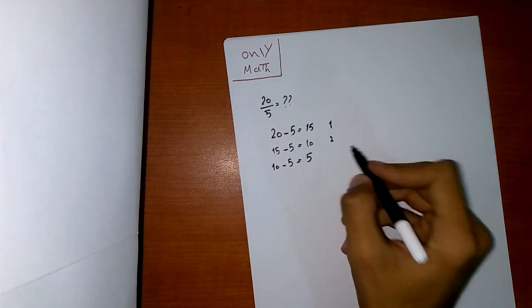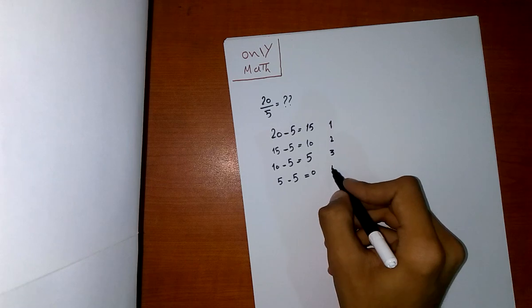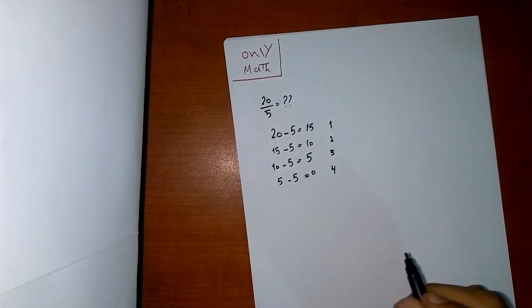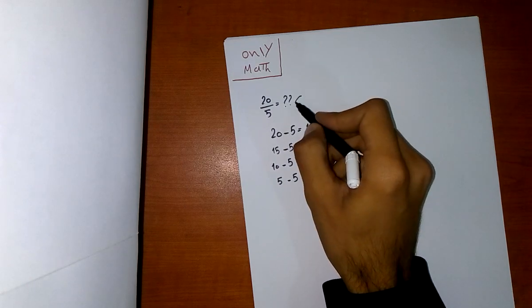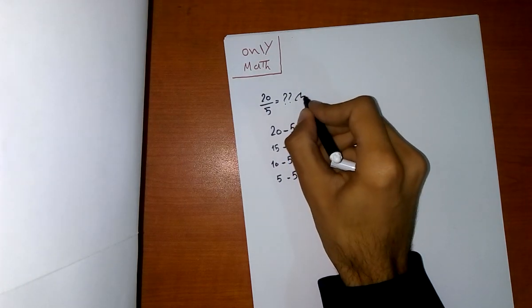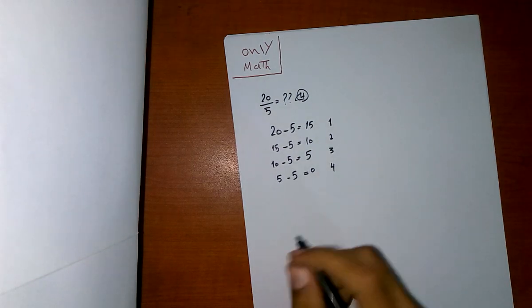equals 5, number 3. And 5 minus 5 equals 0, number 4. So you will say that 20 divided by 5 equals 4. The answer is 4. But what if I told